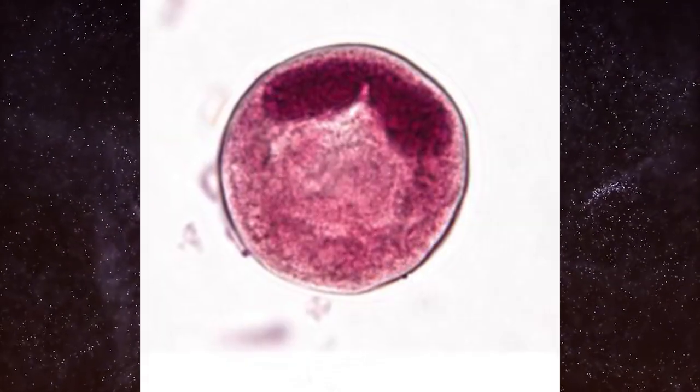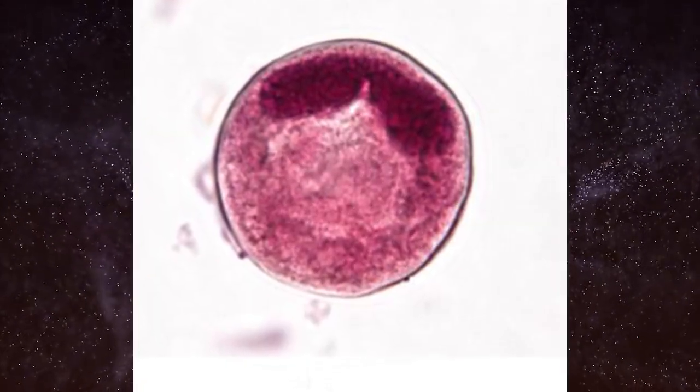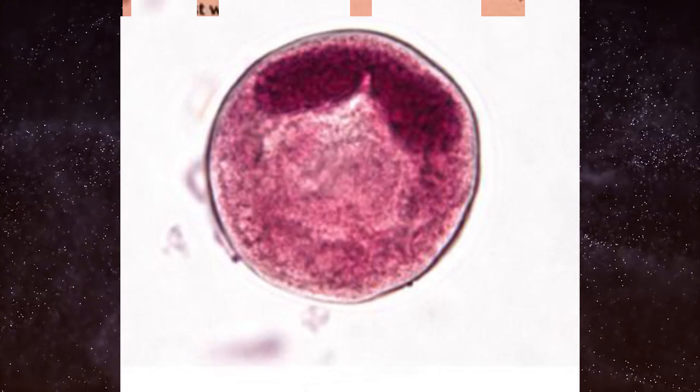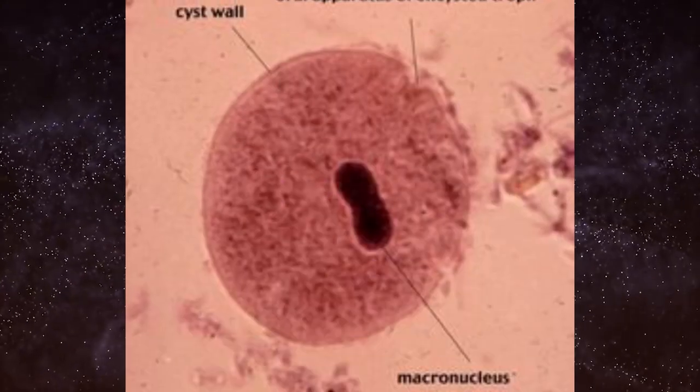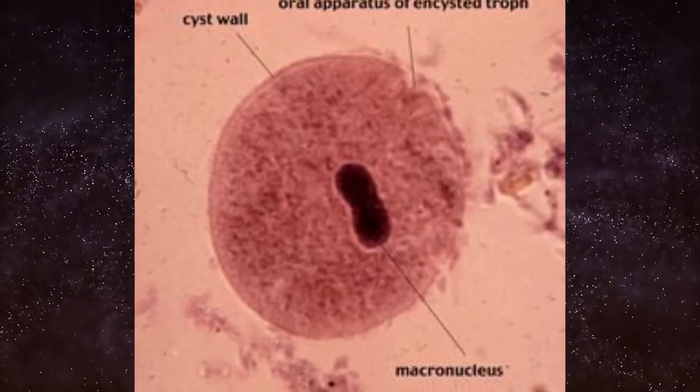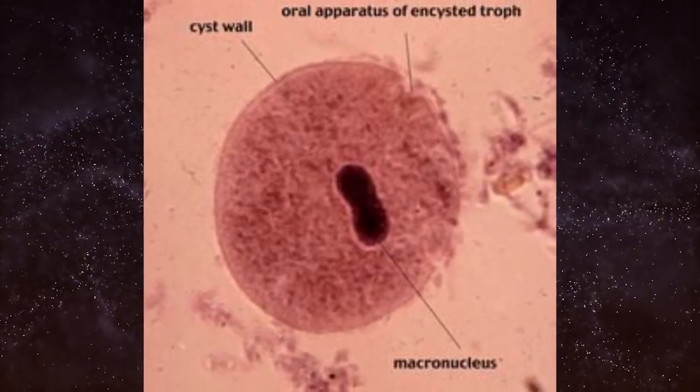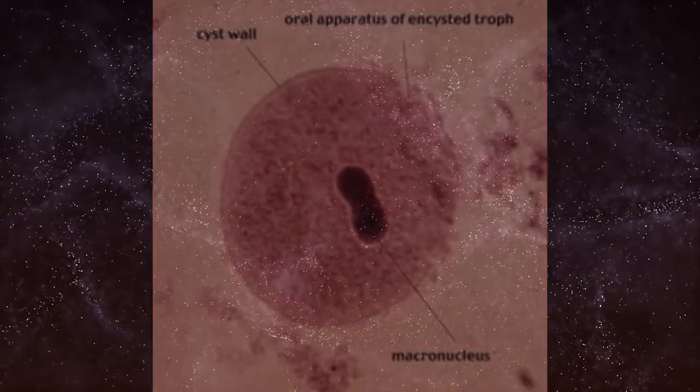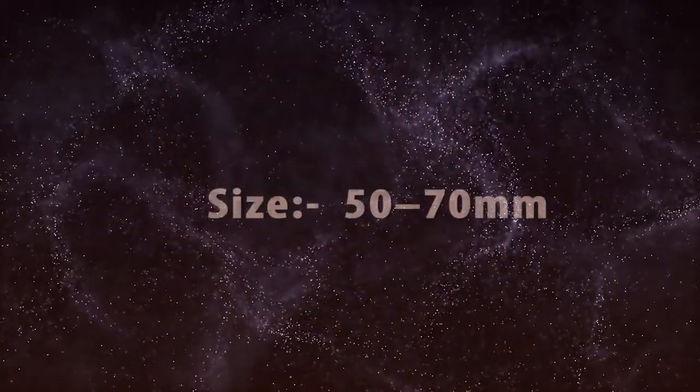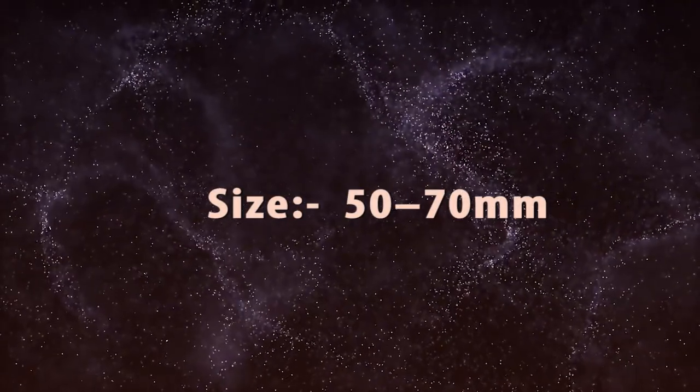Balantidium coli cysts are usually round in shape and covered with a thin double wall shell. Cysts usually measure 50 to 70 micrometers.